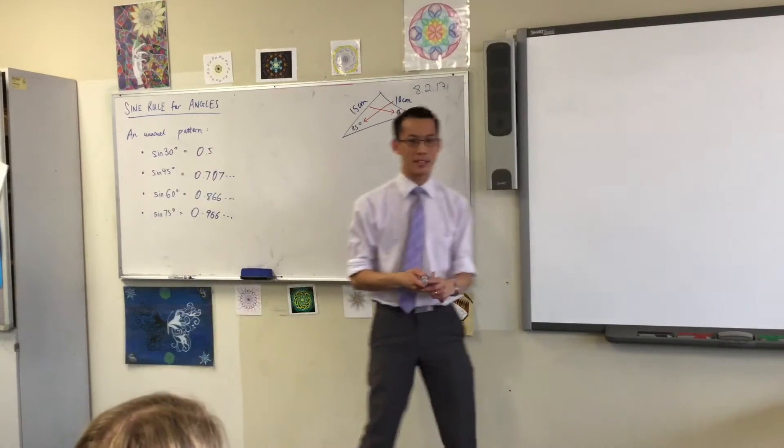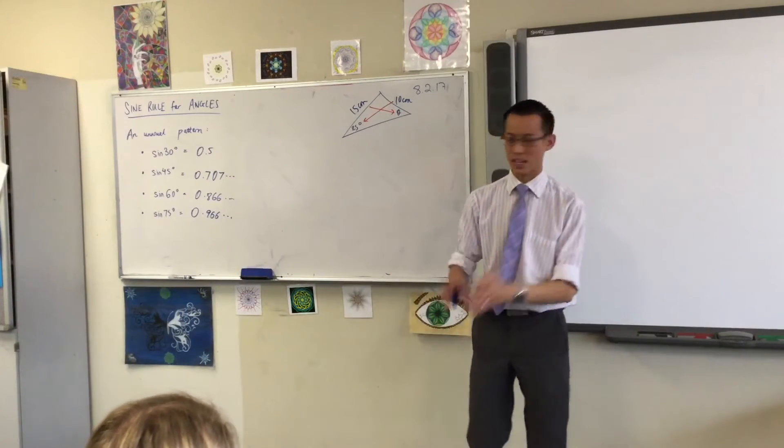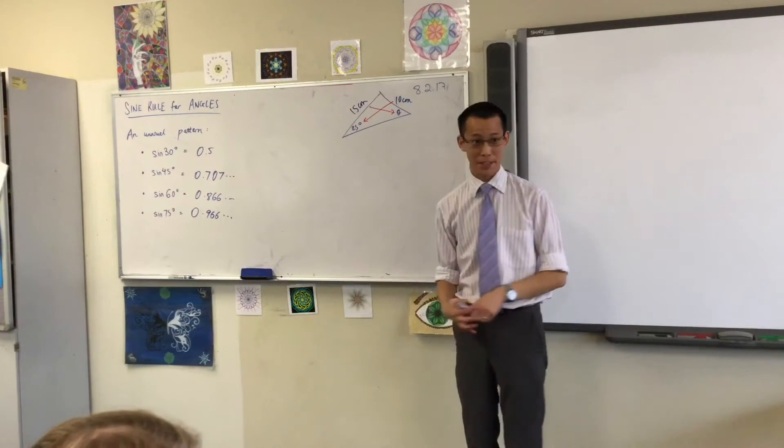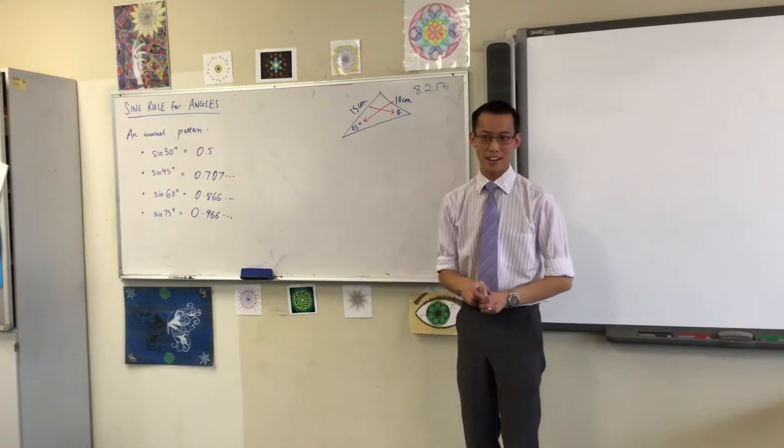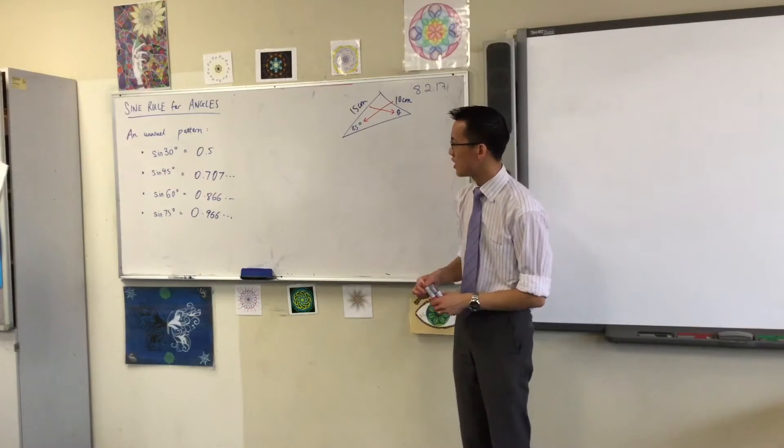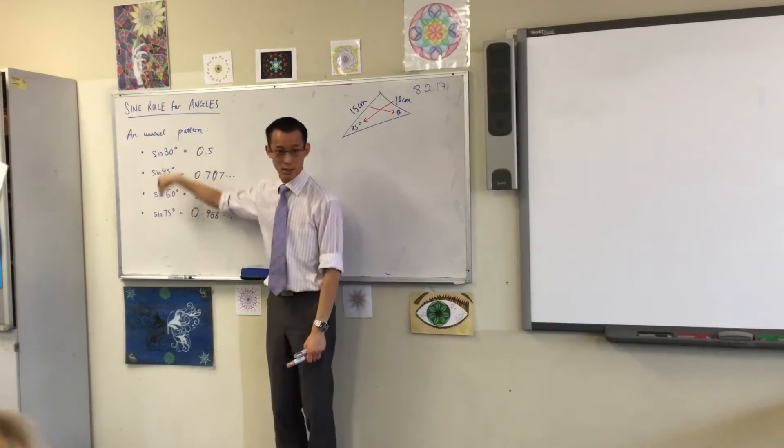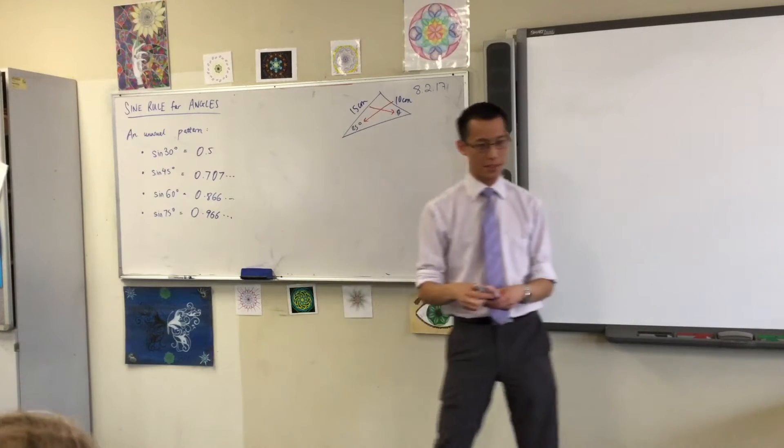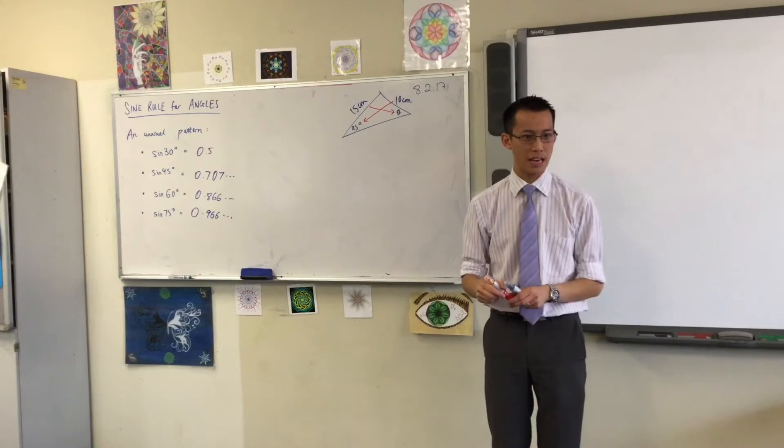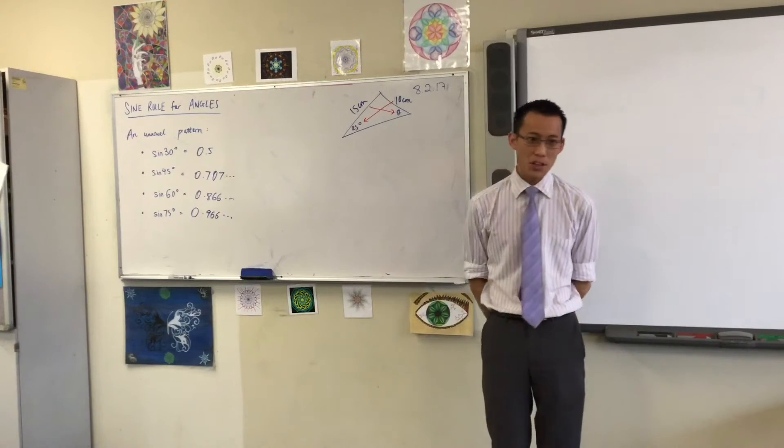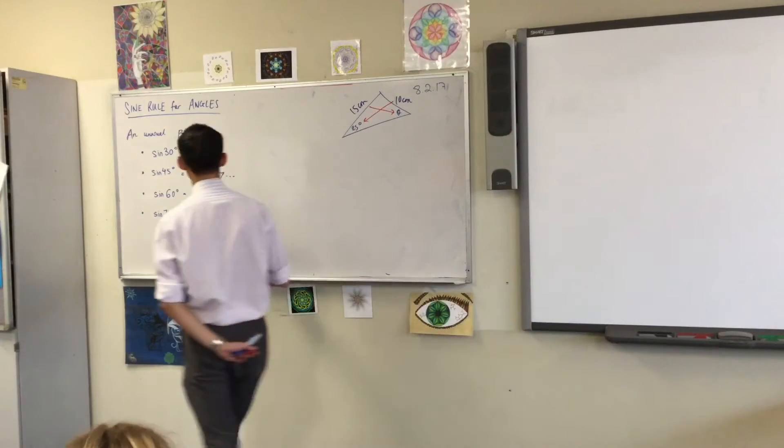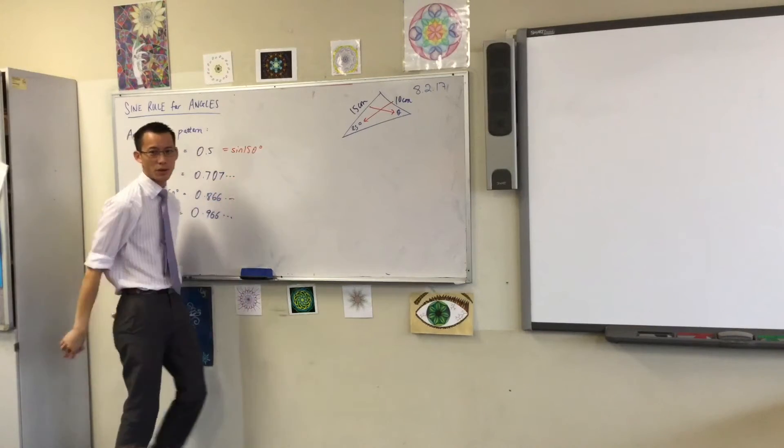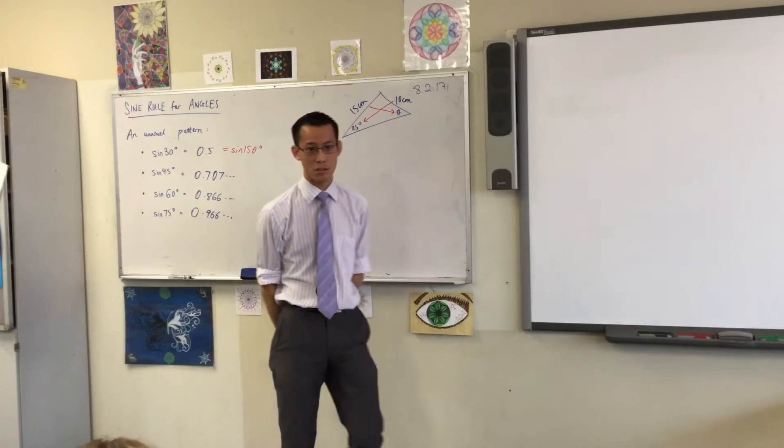Now, I could have done this for any set of angles that I like, but these are kind of nice round angles. Here's where it gets a bit creepy. Again, with your calculator. This time, I would like you to input—not sine any of these angles—but sine 150 degrees. And what you'll notice is, for some reason, it's exactly 0.5, just like sine 30 was.